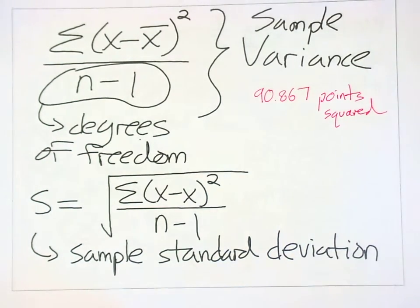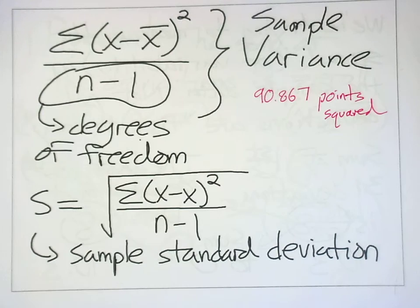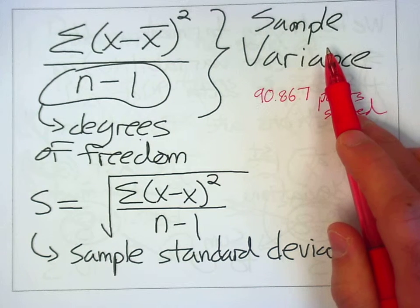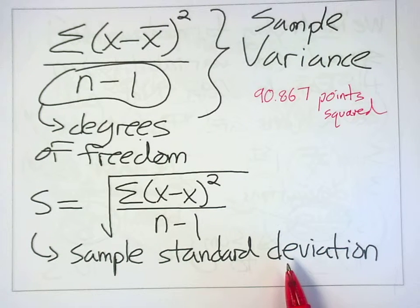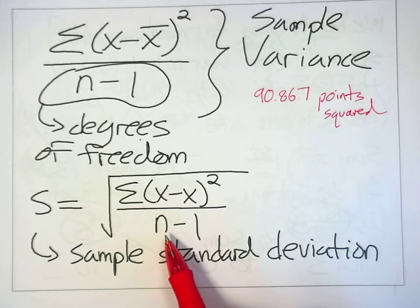So that's a problem, because I'm not interested in squared points. I'd really rather have plain points. That's a whole lot easier to interpret. And that's why instead of focusing on the sample variance, we focus on what's called the sample standard deviation. Notice it's not called the average deviation because it's really not a true average. I didn't divide by n. I divided by the degrees of freedom, n minus 1.